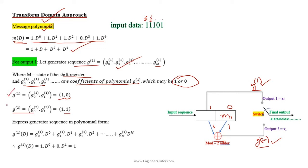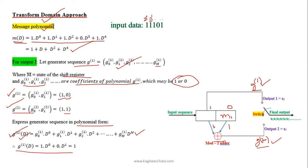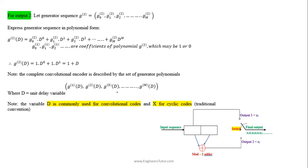We express these two generator sequences in polynomial representation. The general equation for g(d) is obtained by multiplying the coefficients with d^0, d^1, etc., where d is the delay variable. For output 1 we get the generator polynomial g1(d) = 1, and for output 2 we get the generator polynomial g2(d) = 1 + d. Note that d is the unit delay variable used for convolutional codes, while x is used for cyclic codes.